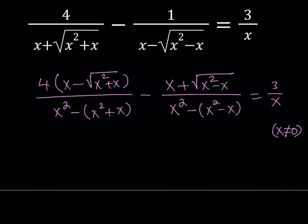So now, we have a simpler denominator for both of them. x squared minus x squared is going to cancel out, and we're going to end up with a negative x here. And that negative x actually can be simplified.